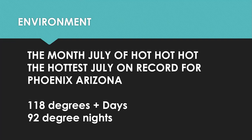The hottest July on record for Phoenix, Arizona: 118-degree days, 110-degree days for a month, and most importantly, 92-degree nights. We even had classic saguaro cacti dying because it was too hot at night. These plants evolved under conditions where it gets very hot in the day but drops to the 60s and 70s at night — and it wasn't getting there, disrupting their function, and they were falling over.